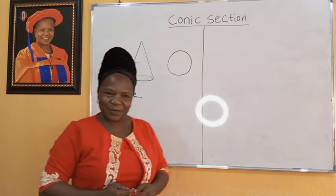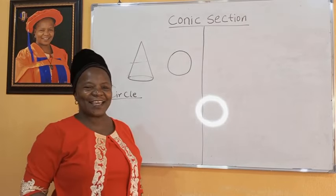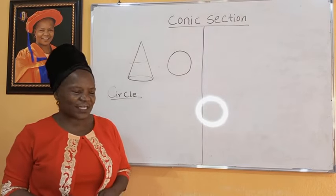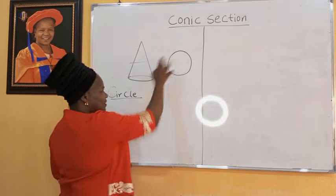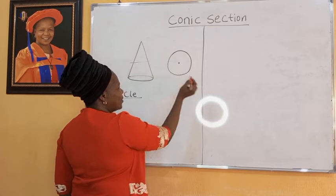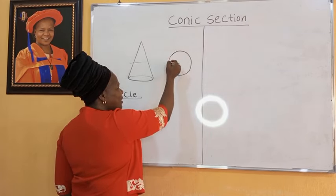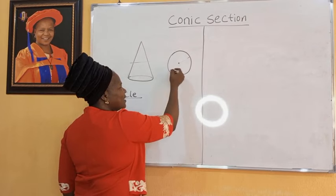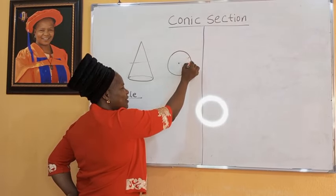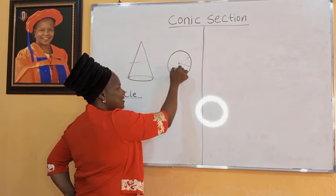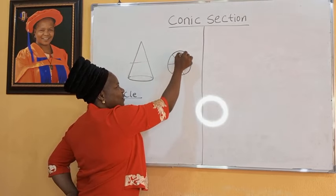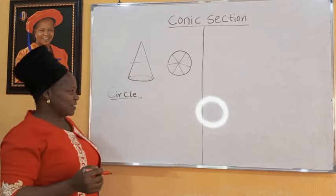What is a circle? A circle is a set of points whose distance from a fixed point is a constant. We have a fixed point here, and we are saying that a circle is the set of points whose distance from this fixed point is a constant — the same. And that is what we call the radius of a circle.